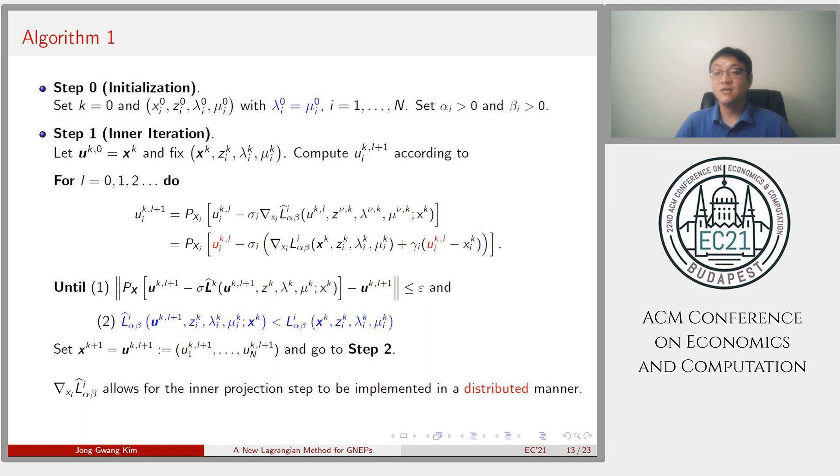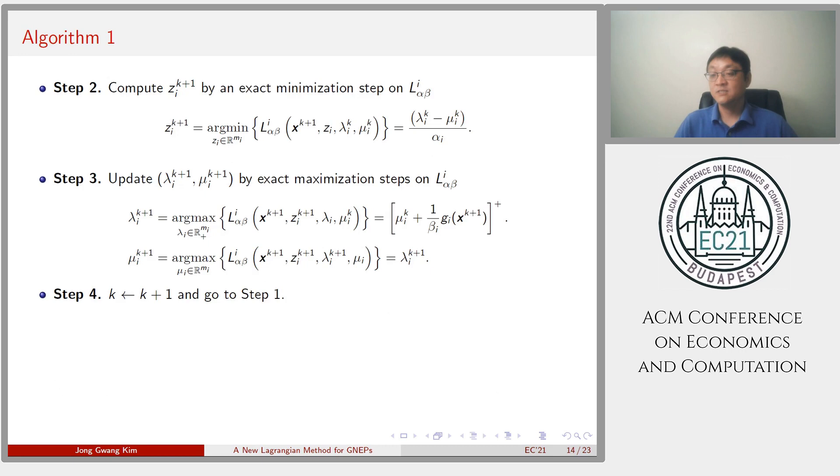Given x^k, z^k, lambda^k, mu^k, we update u^{k,l} using inner gradient-projection step until the algorithm detects a point u^{k,l+1}, satisfying the fixed-point condition 1 as well as descent condition 2 for all players. Then, u^{k,l+1} is set to x^{k+1}. Notice that the gradient of L hat_i with respect to x_i allows for the inner iteration to be implemented in a distributed way because each player i can update its own u_i^{k,l} while keeping x^k fixed.